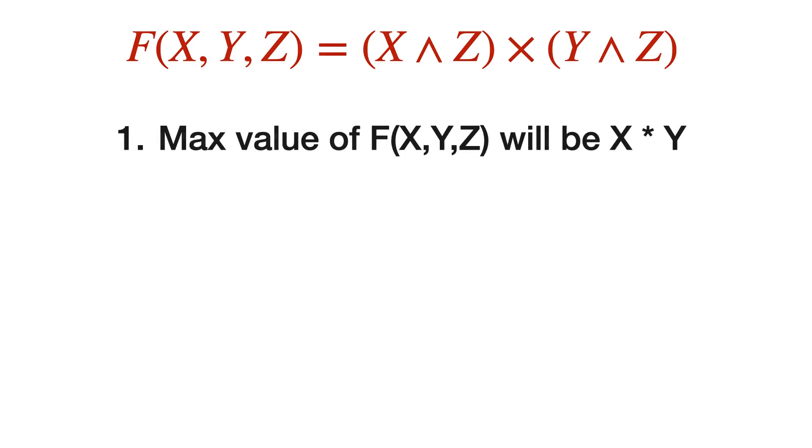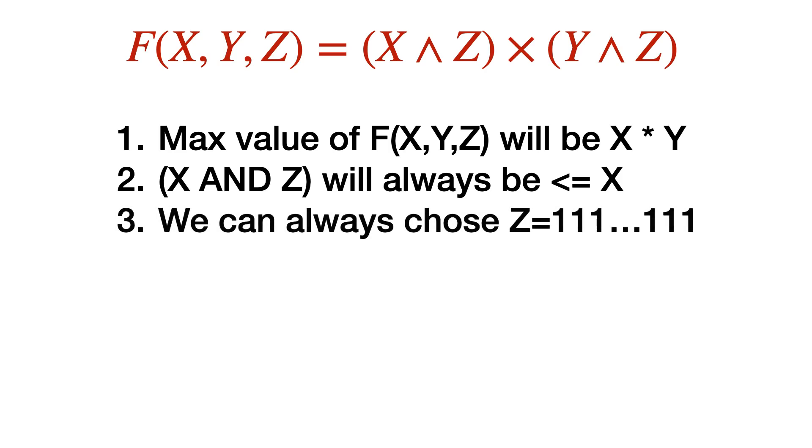One thing to note is that the maximum value that you can get out of F is nothing but X into Y. When you perform an AND operation on some number X, it will always be less than or equal to X. We can always choose Z as all 1s in binary, which makes us achieve the maximum value X times Y.